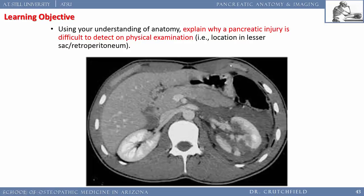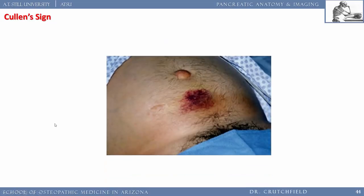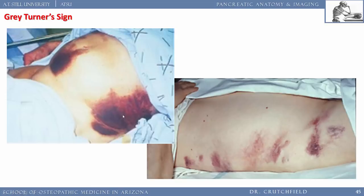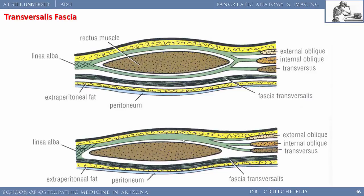Pancreatic injury is hard to detect because it's retroperitoneal — pressing on the anterior abdomen doesn't reach where it hurts. The patient has flank pain, blood in urine, and possible hypotension from blood loss, but no anterior tenderness. Cullen sign: superficial edema and bruising around the belly button from blood leaking from the retroperitoneum up through the transversalis fascia. Gray Turner sign is the same process on the flank.